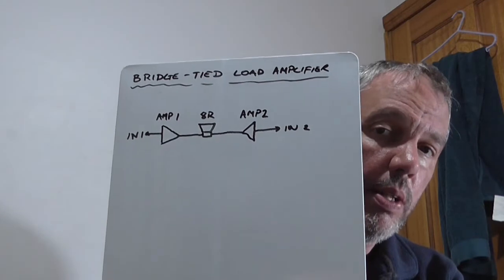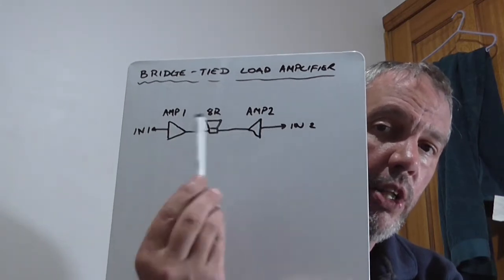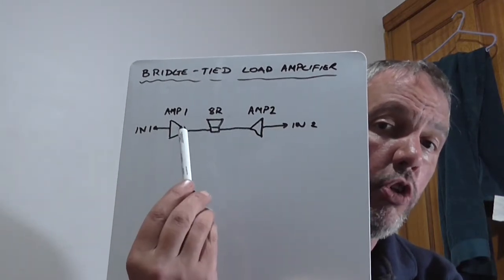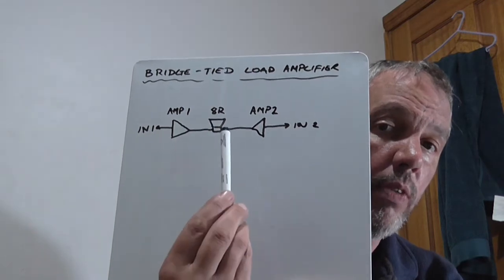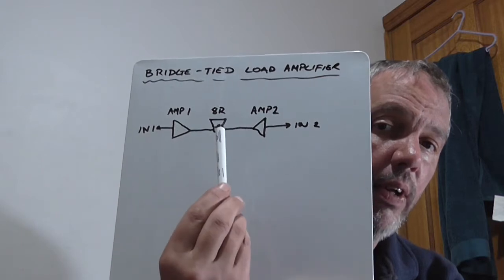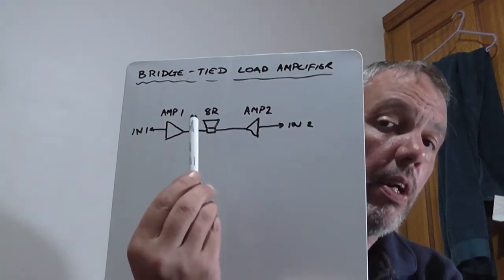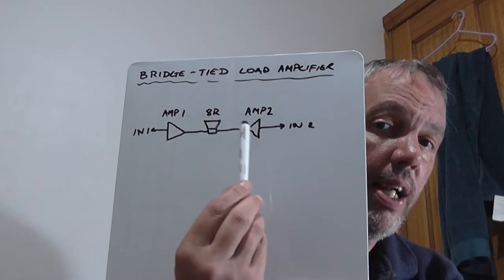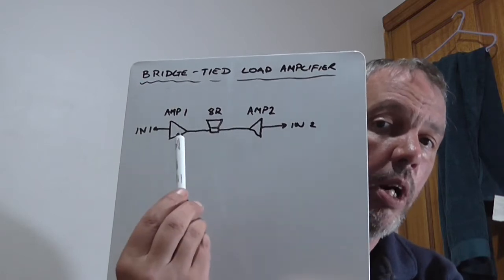There is a disadvantage to this. Unless each of these amplifiers are capable of driving two ohm loads you cannot use a four ohm speaker. Because effectively each channel is now seeing half the speaker impedance. So for 8 ohms we are now seeing on each channel 4 ohms effectively.